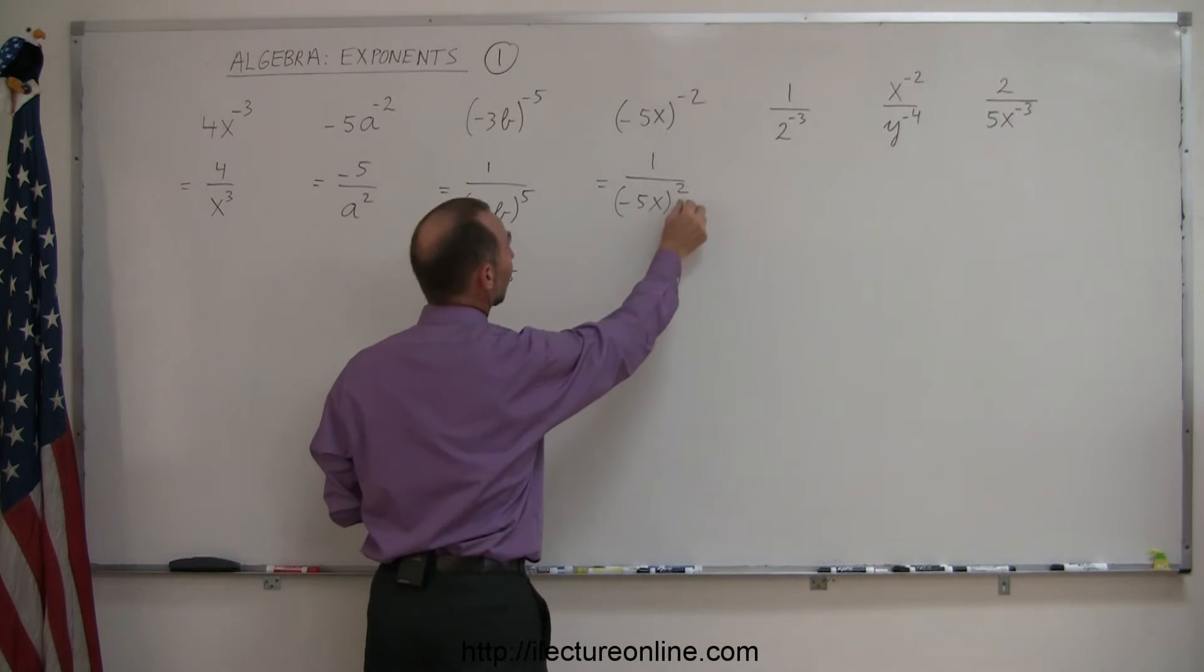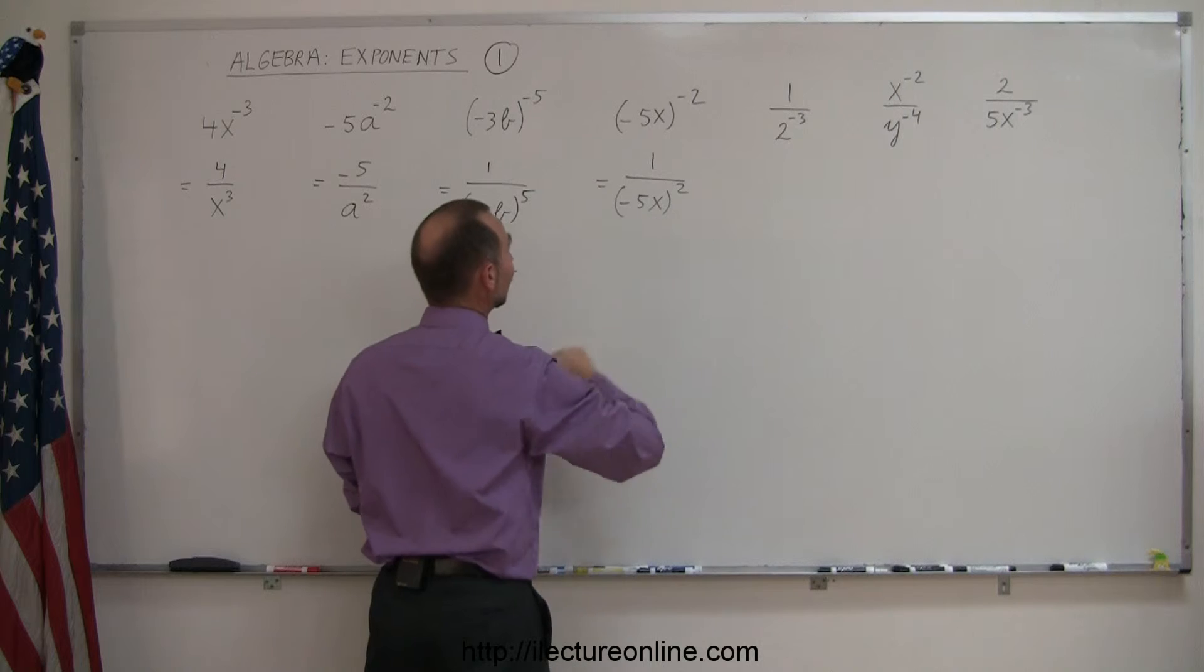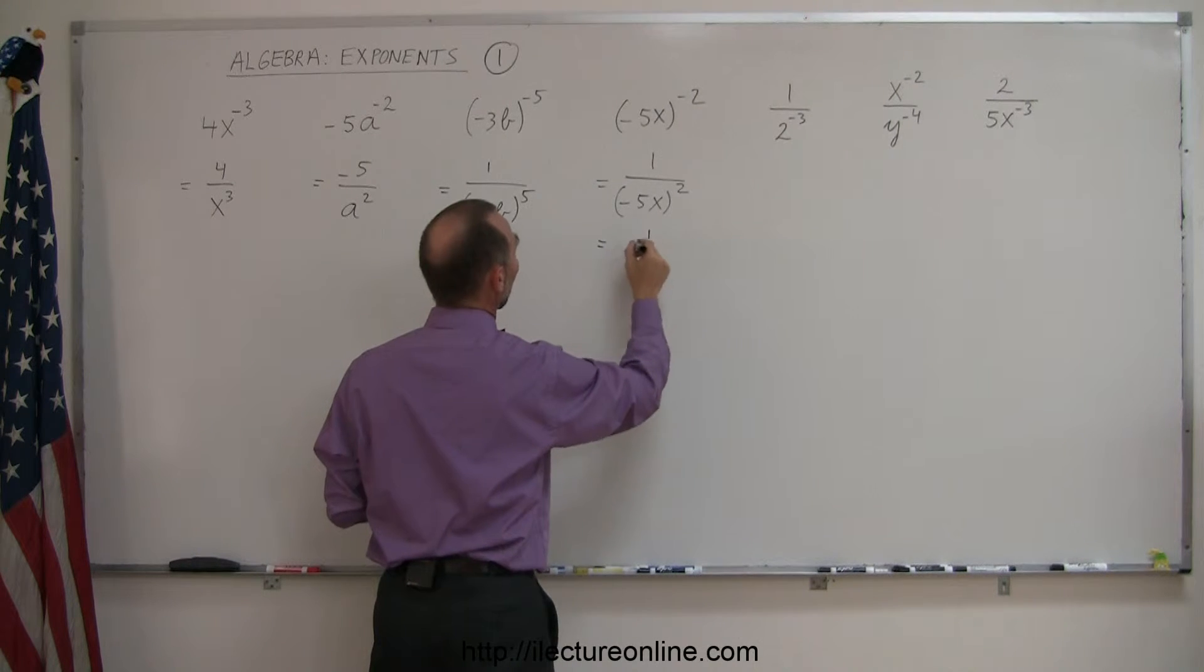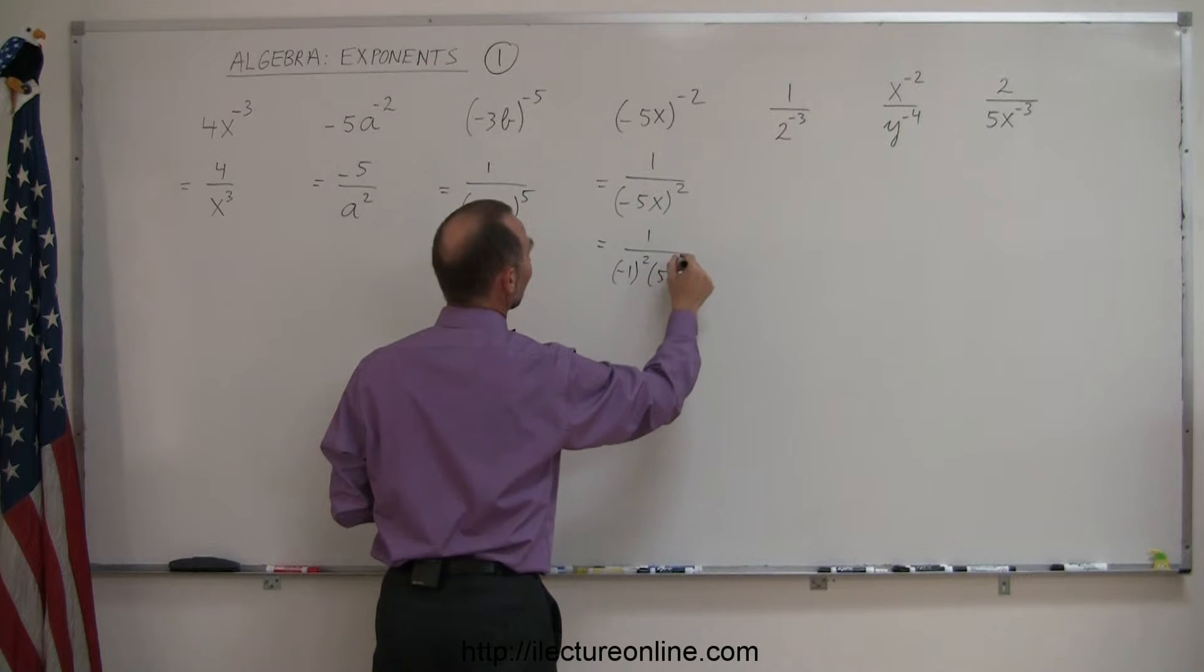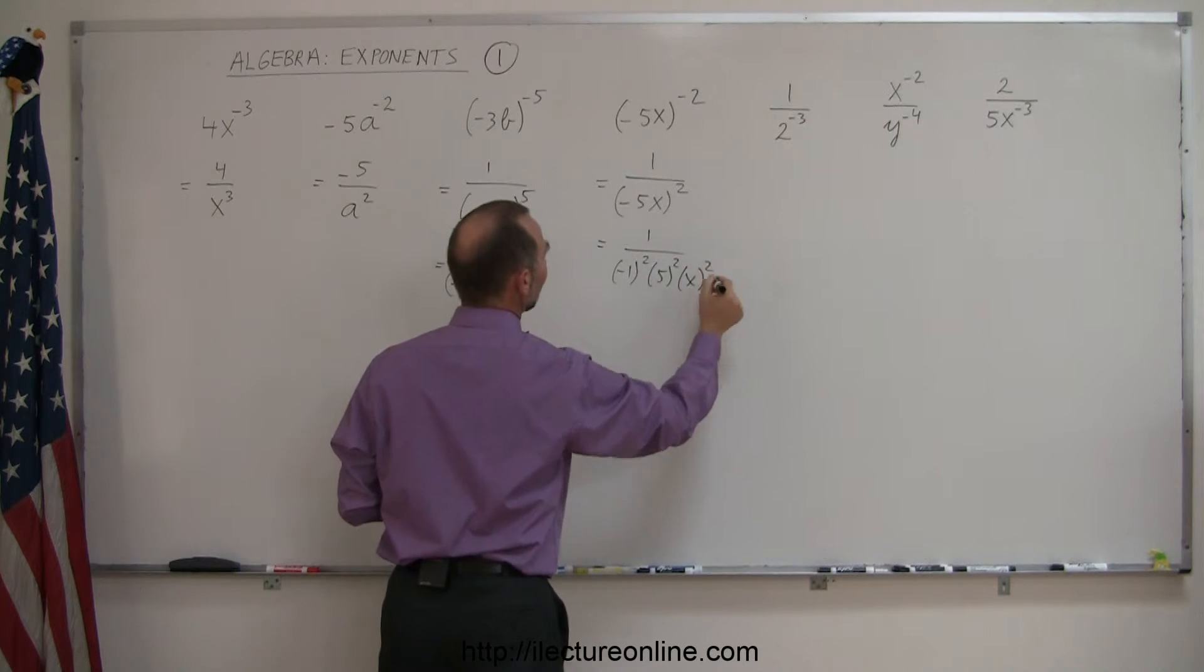And now we realize that the positive 2 applies to the negative, the 5, and the x, so this can be written as 1 over negative 1 to the 2nd power times 5 to the 2nd power times x to the 2nd power.